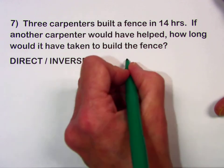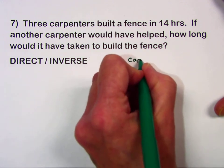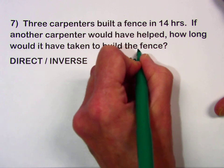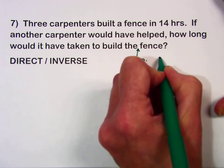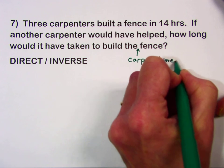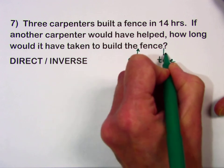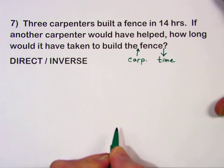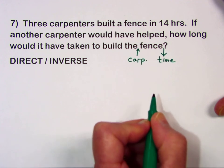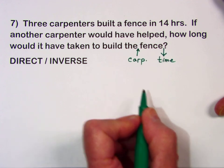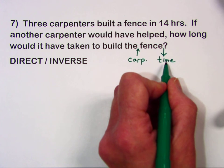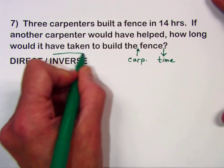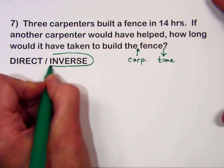Here we're talking about the number of carpenters increasing. When comparing the time, experience tells us that more people on the job are going to cut the amount of time. When one quantity is increasing as the other decreases, this is an example of an inverse relationship.